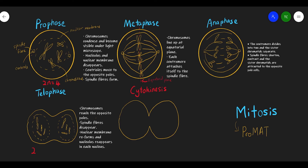In telophase there are four chromosomes on the left and four on the right, so 2n equals 4 on each side. To count chromosomes, always count by the centromere. In prophase there are four centromeres, so there are four chromosomes. Likewise in telophase, there are four centromeres on each side, giving 2n equals 4 on the left and 2n equals 4 on the right.